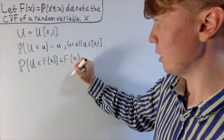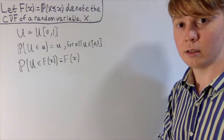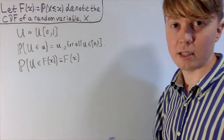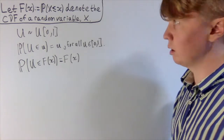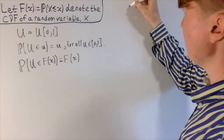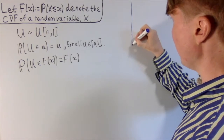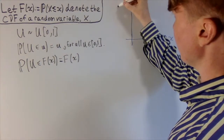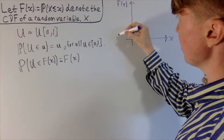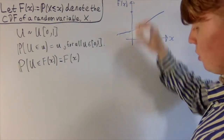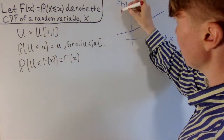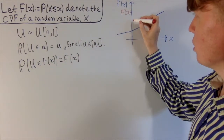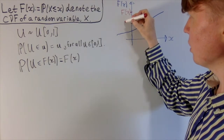What we're going to do next is use the fact that the CDF, this function F(x), is an increasing function, or at least a non-decreasing function. Let's draw out a picture of the CDF. Imagine we've got x on the horizontal axis, and the CDF is some sort of increasing function. You imagine you've got some value F(x) up here, and we know that F(x) is greater than or equal to u, so u is somewhere down below.